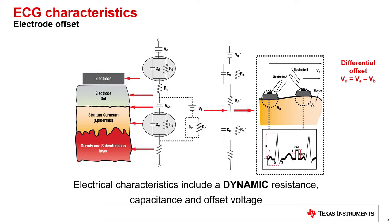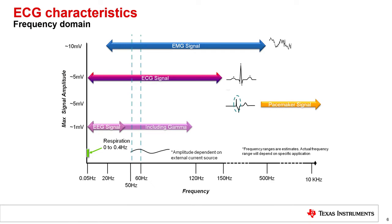The AC component of the ECG waveform is relatively low in frequency, usually between 0.05 and 40 hertz. Diagnostic quality ECG applications may require up to 150 hertz or more to extract additional information from the waveform. This diagram shows where ECG falls in the frequency spectrum relative to other biopotential measurements. Note the magnitude of the ECG is just a few millivolts. Later on in this presentation, we will also discuss the detection and measurement of pacemaker signals.